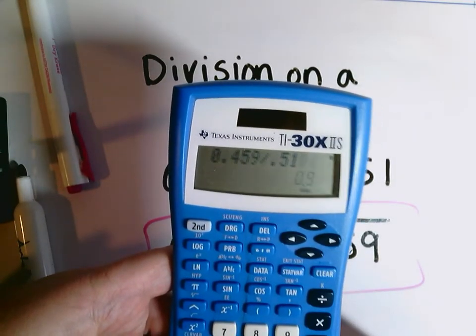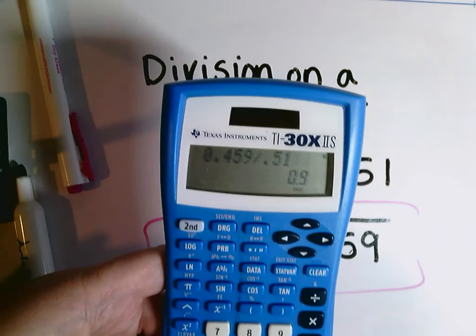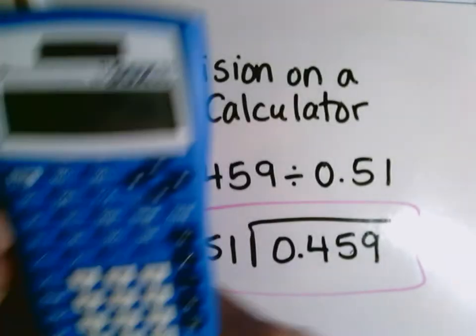51 hundredths equals, I've got 9 tenths. 9 tenths, which is much better than if I put it in backwards. I'm just going to write that down, 9 tenths.